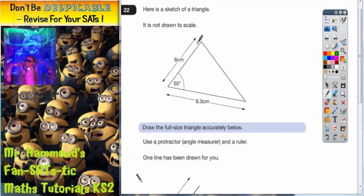All that means is that this side that says 6cm, if you actually measure it, it may not be 6cm as it is drawn because it is not drawn to scale. And this angle may not actually be 55 degrees as it is drawn, not to scale. So you've got to actually measure out the 55 degrees.